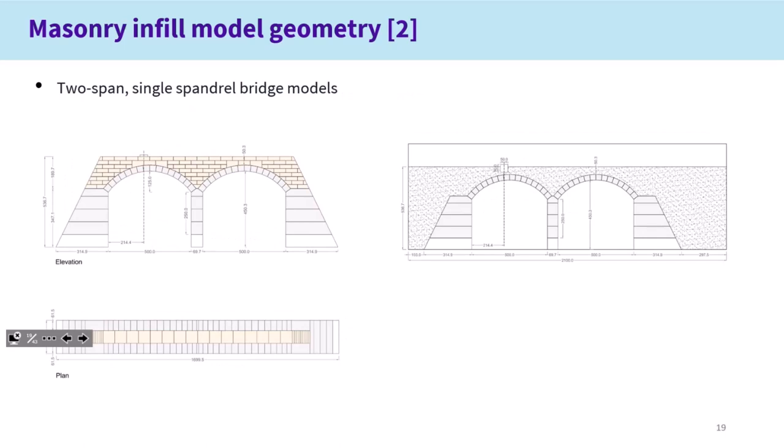Then we had a second series of tests. These included two-span bridges. Again, we had models with internal spandrels only, and also models with soil for comparison.